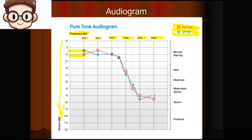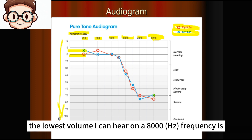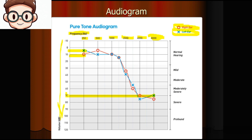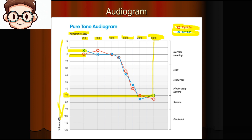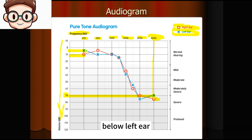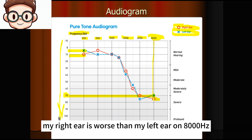Another example: at a frequency of 8000 Hz, the lowest volume I can hear on my left ear is 70 dB. In this particular case, the doctor may say you have 70 dB hearing loss on your left ear. The right ear is worse, because the right ear reading is 5 dB lower, so my right ear is worse than my left ear at 8000 Hz.